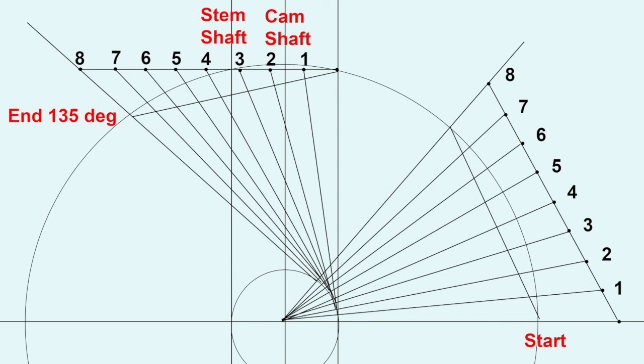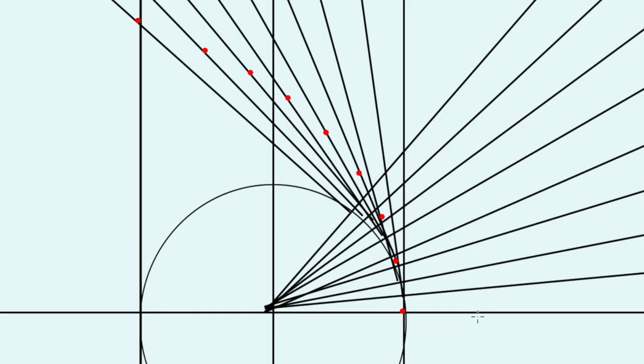Now we're going to work out the actual curve. This is the final step of making the curve. We'll use some little red dots to mark the points here. Remember in the previous diagram we worked out what one eighth of the lift was.